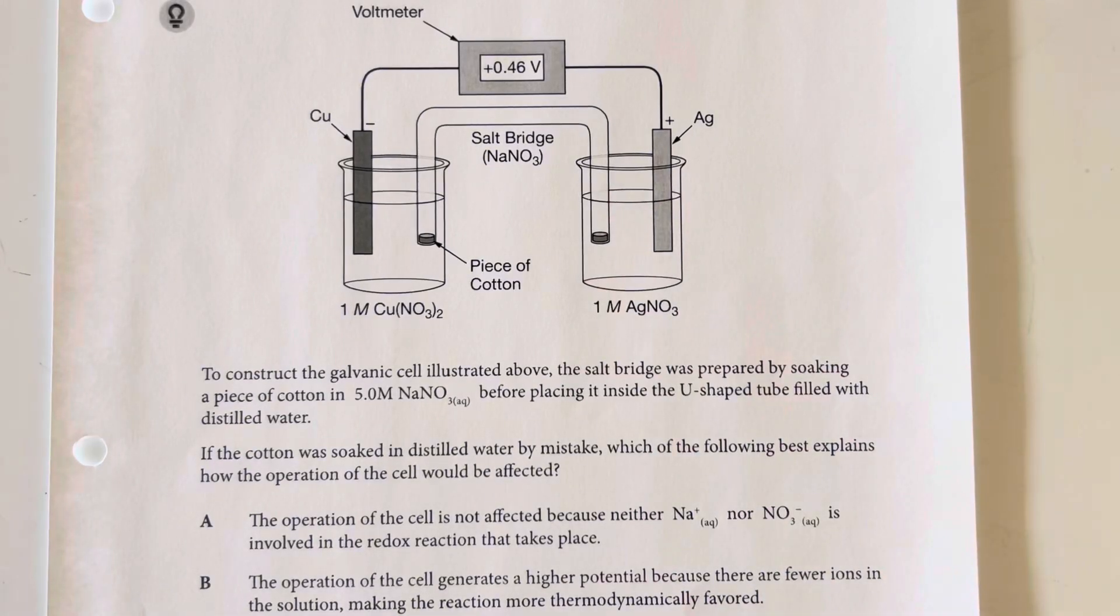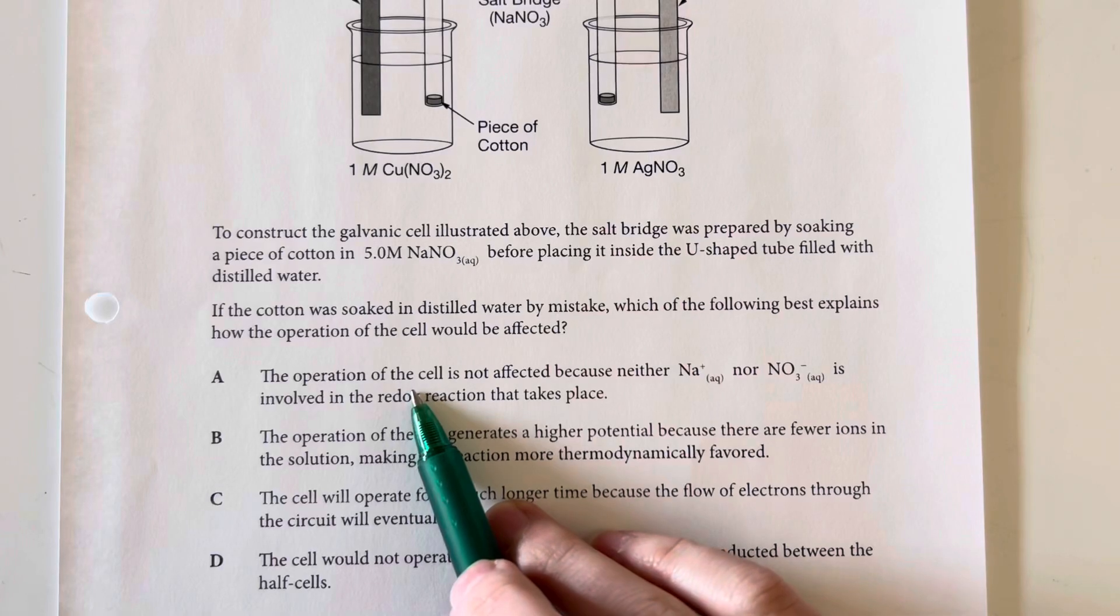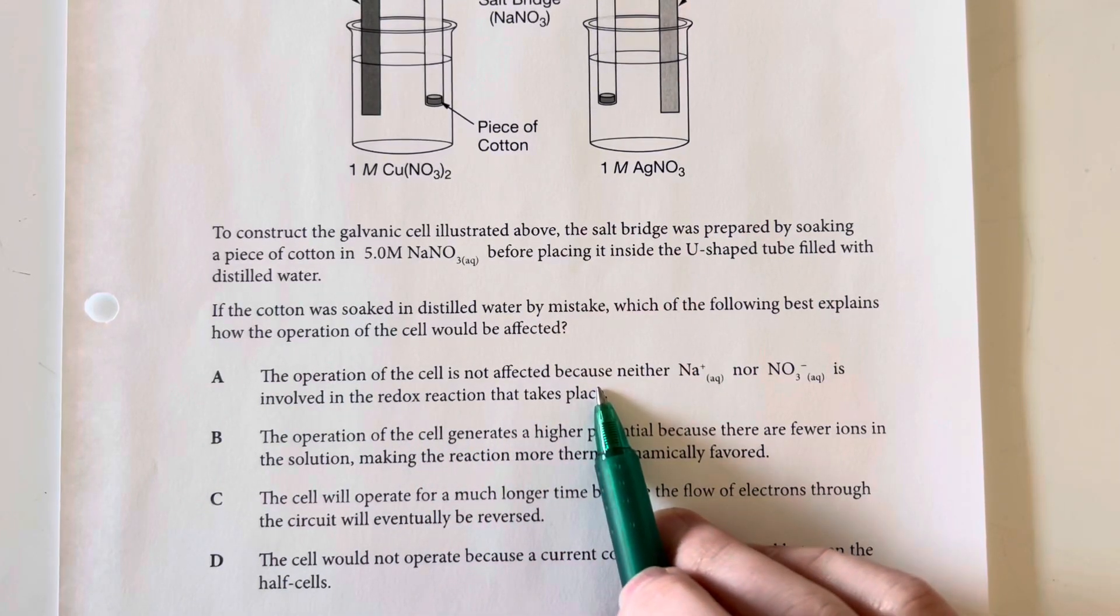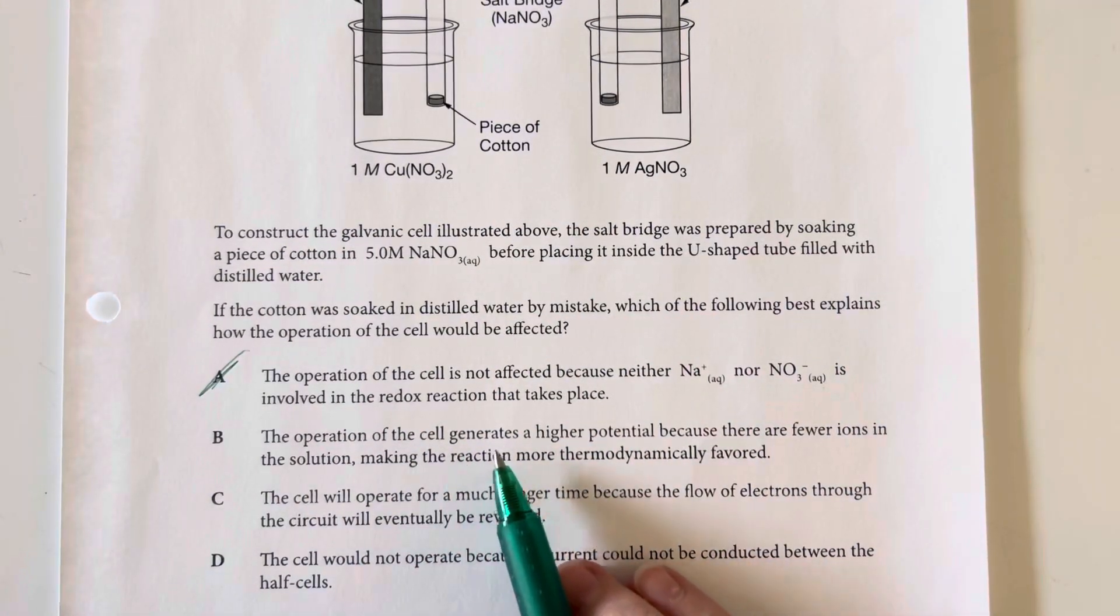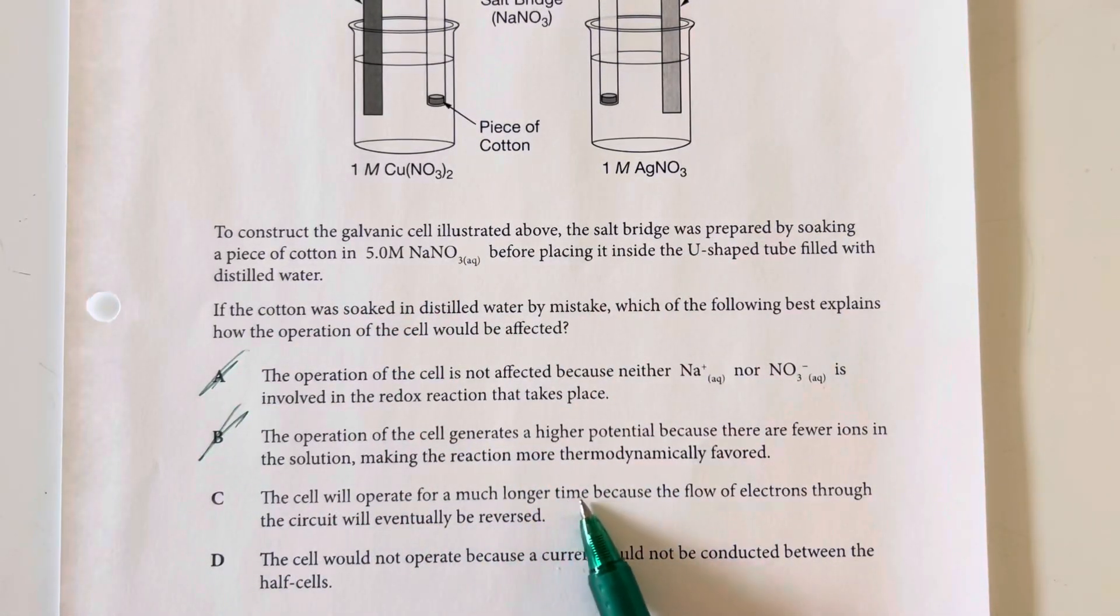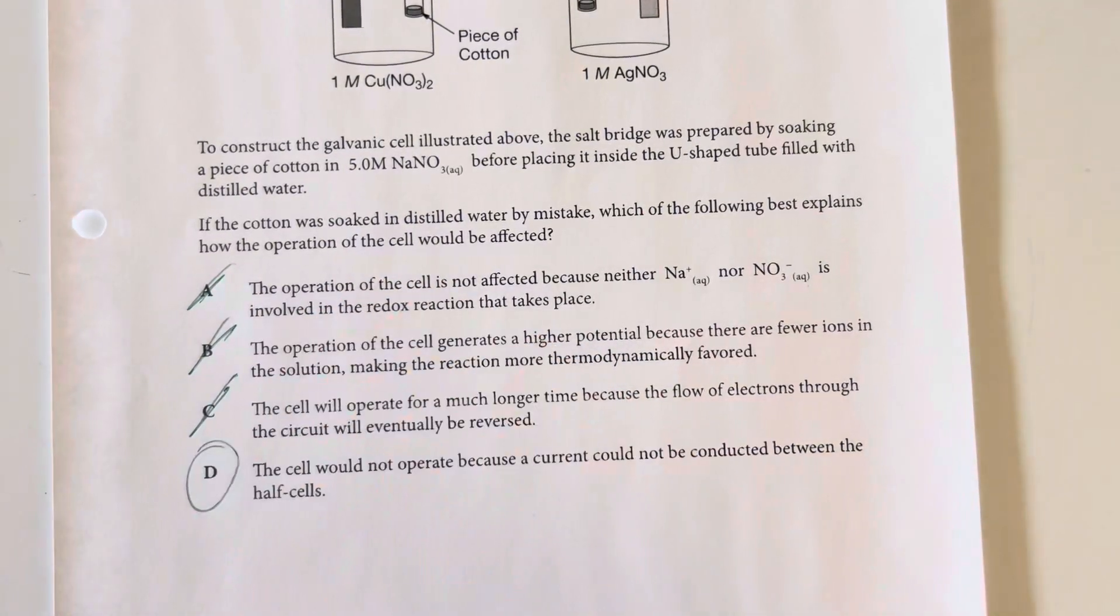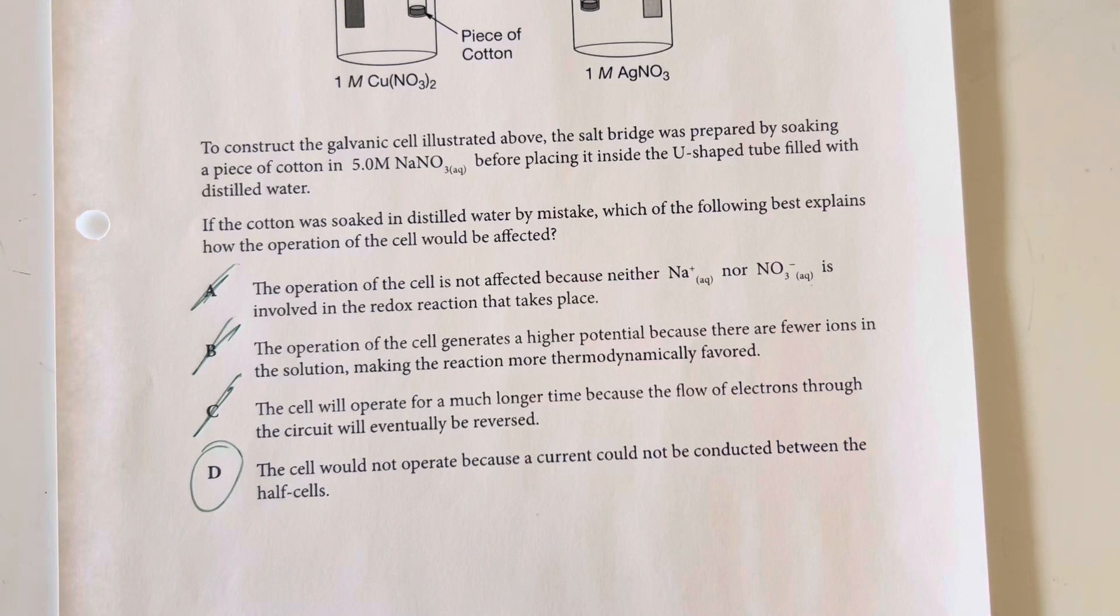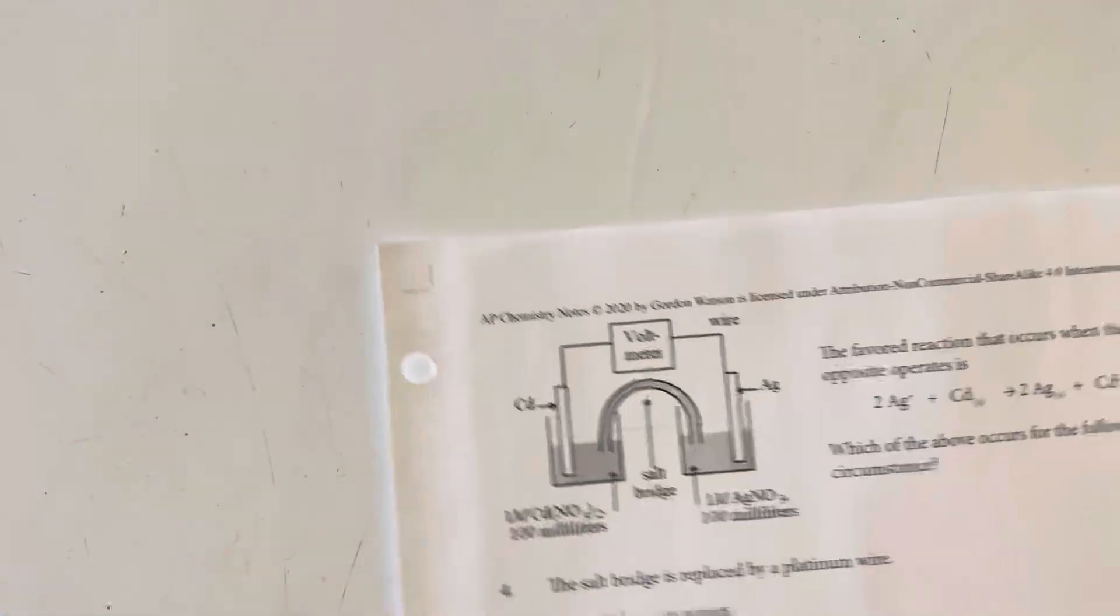I'm looking for something along the lines of: no salt bridge, no cell. 'Not affected because sodium and nitrate are not involved in the redox reaction'—that's not true. 'Generates a higher potential'—no. 'Cell will operate much longer'—nope. 'The cell will not operate because current could not be conducted'—yes. Without salt in the bridge, the bridge fails and we wouldn't have a cell. Option choice D is my answer.